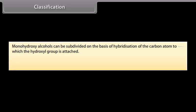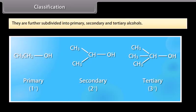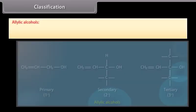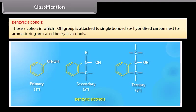Monohydroxy alcohols can be subdivided on the basis of hybridization of the carbon atom to which the hydroxyl group is attached. Compounds containing sp3 hybridized carbon atom bonded with hydroxyl group: the hydroxyl group in alcohol is attached to sp3 hybridized carbon of an alkyl group, further subdivided into primary, secondary and tertiary alcohols. Allylic alcohols are those in which the hydroxyl group is attached to sp3 hybridized carbon next to a carbon-carbon double bond. Benzylic alcohols are those in which the hydroxyl group is attached to sp3 hybridized carbon next to an aromatic ring.